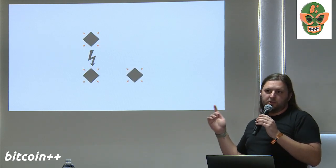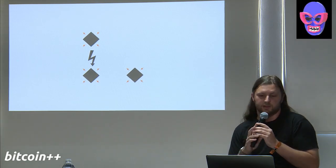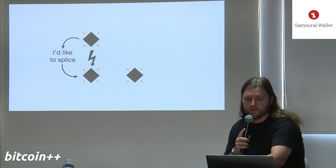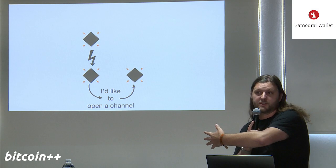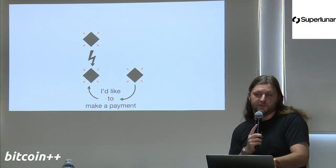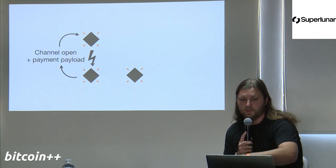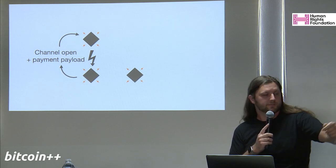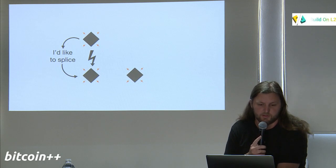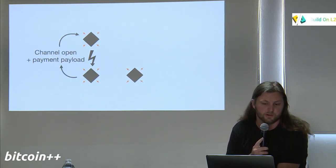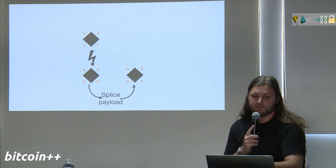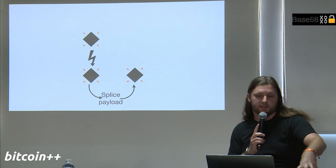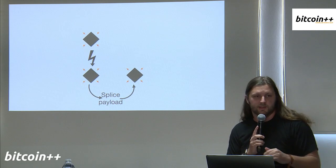Here's how it works in practice with the three-node example: one channel says they'd like to splice and tells their peer. That peer is waiting with what it wants to do — open a channel with another node. It tells that node, and that node says it has a pending payment it wants to do too. That gets relayed back to the initial one. The channel open and payment payloads are passed up to the first one. There are four communications in the code, plus a fifth: the middle node also relays the splice request from the first one over. In this way, every node in this collaborative transaction ends up getting all of the payload details, passed from peer to peer.